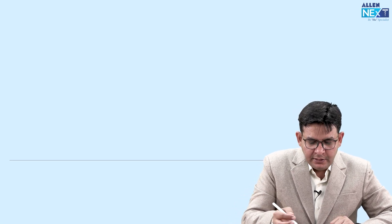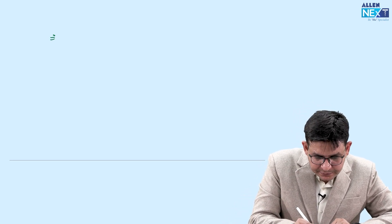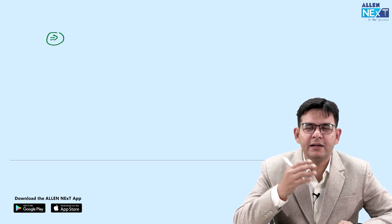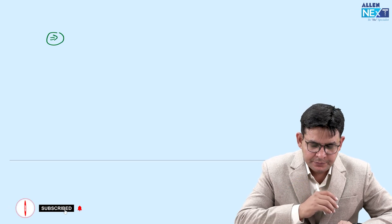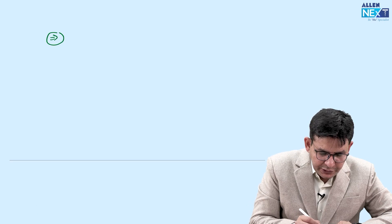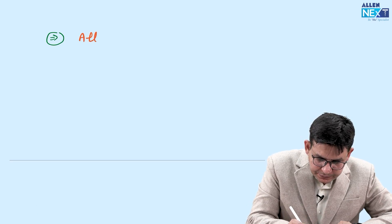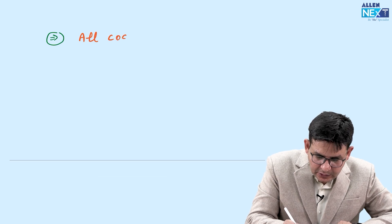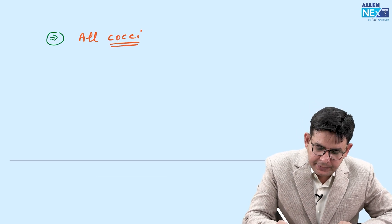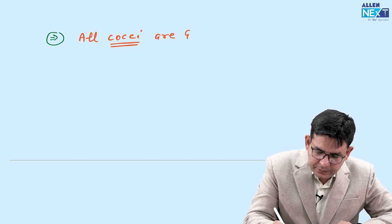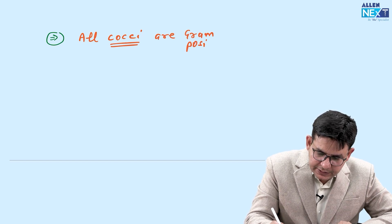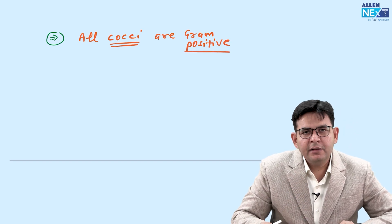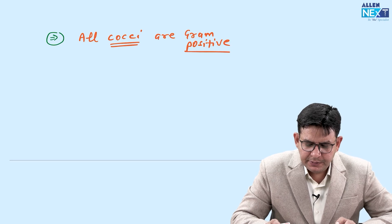Let's start without wasting time. The first concept you need to know is about gram classification. From second year up to final year, everybody is confused about what is gram-positive cocci, gram-positive bacilli, gram-negative bacilli, gram-negative cocci. For that, you need to remember a particular mnemonic: all cocci are mostly gram-positive.